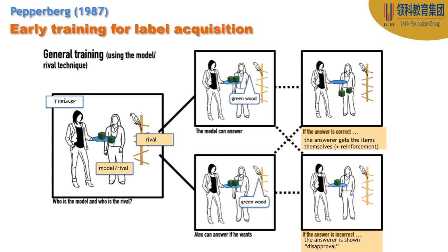That's the whole purpose of the model-rival training. However, if the model does not get it right, she is going to be shown disapproval, or Alex will be shown disapproval. What disapproval actually means is not quite specified — that's what it says in the primary source. So that's the early training: once we have the labels, we can go into the later training, which is for the concept of same and different.